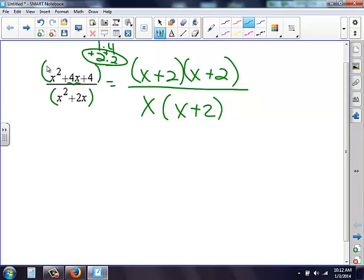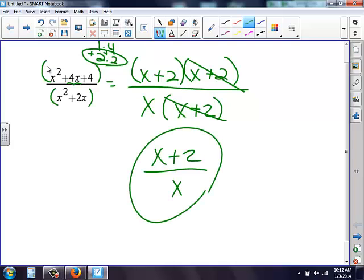Now I can start crossing stuff off. If I have an x plus 2 here, I can cross off an x plus 2. That's the only thing else I can cross off. So on top, I'm left with x plus 2. On the bottom, I'm left with an x.